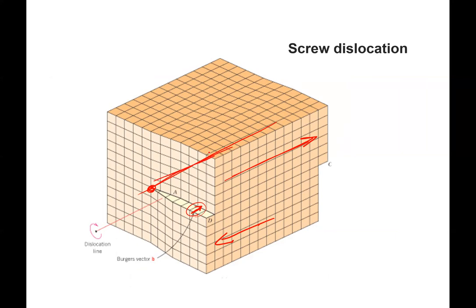That's different, again, than the edge, which was perpendicular. It's really not that important. I'm not going to be quizzing you on that bit of this, but there's an edge and then there's a screw dislocation.